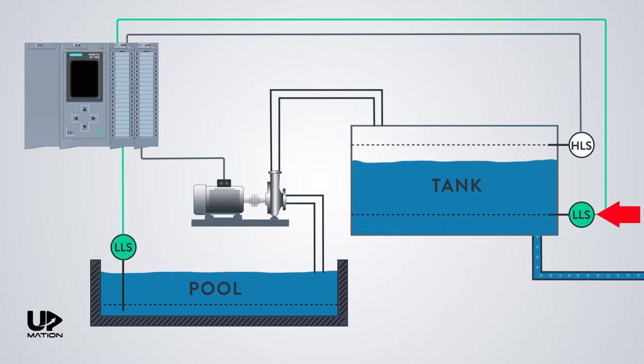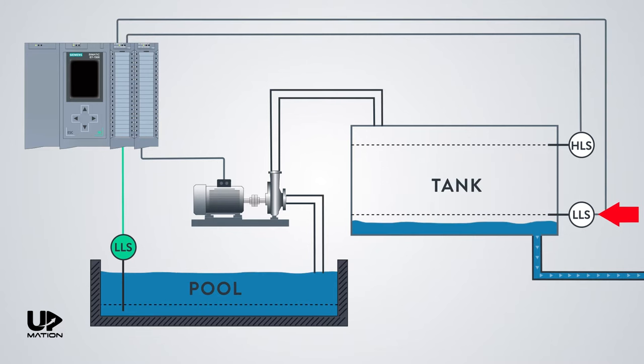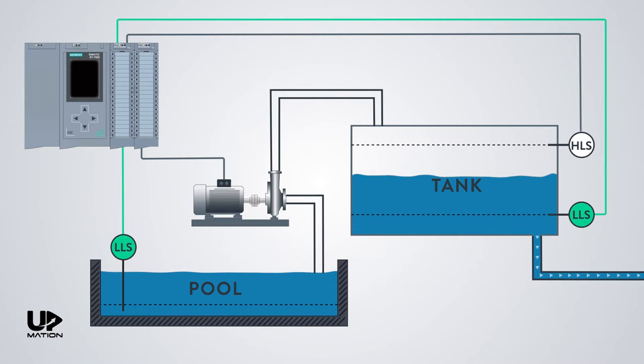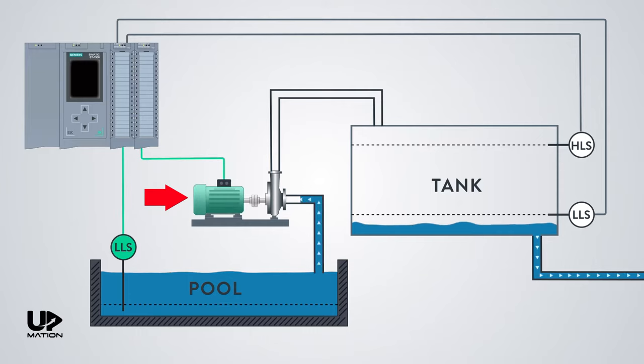As soon as the low-level switch on the tank does not sense the water, PLC should send the start command to the pump, and the pump will start working until the high-level switch senses the water. When the high-level switch senses the water, the PLC will send the stop command to the pump, and the pump will shut down and remain shut down until the low-level switch of the tank does not sense the water again. This procedure will be repeated again and again.